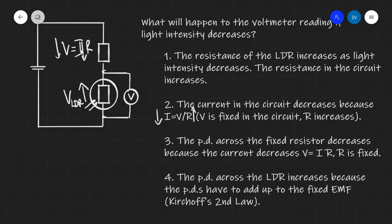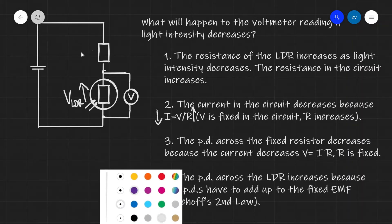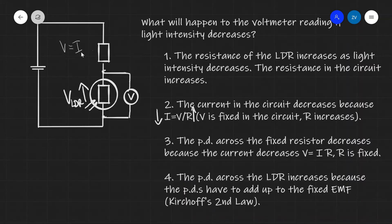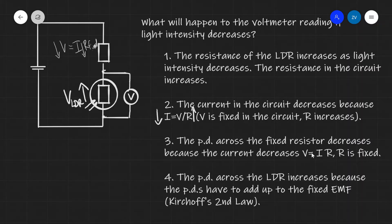Across the fixed resistor, V is equal to I times R. Now R is fixed — this means that it doesn't change. If the current is decreasing, this would mean that V will be going down as well, because R is constant. So the PD across the fixed resistor will be decreasing because the current is decreasing; V equals IR and R is fixed. If the PD across the fixed resistor is going down, this means that the PD across the LDR must go up, because they have to add up to the fixed EMF — this is a statement of Kirchhoff's second law. If the voltage across here goes down, the voltage across the LDR must go up and vice versa.